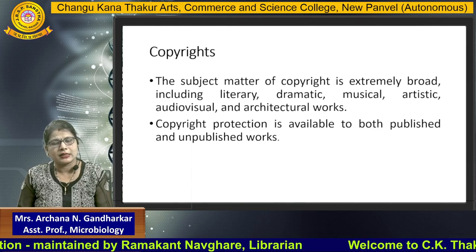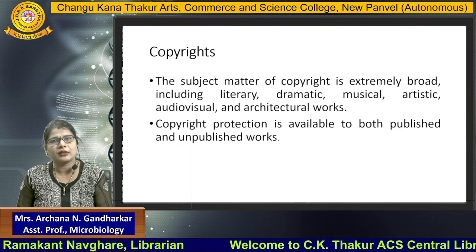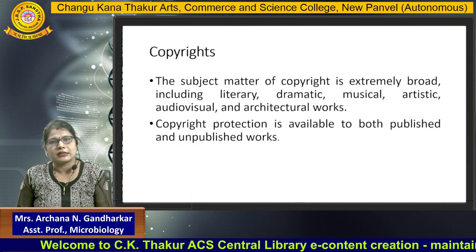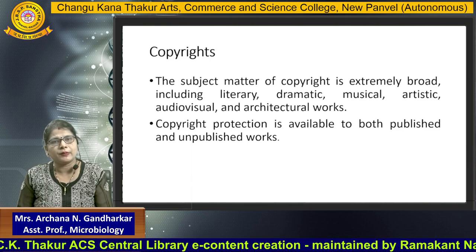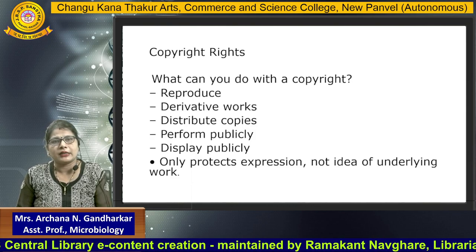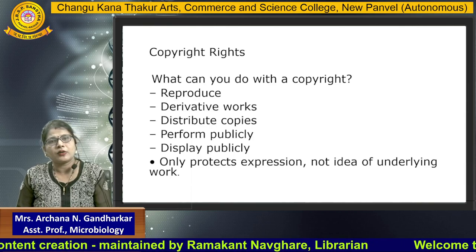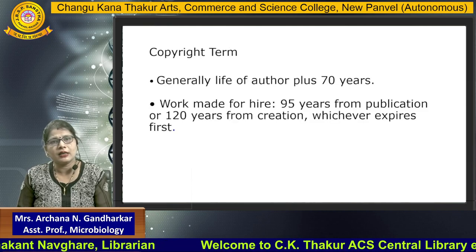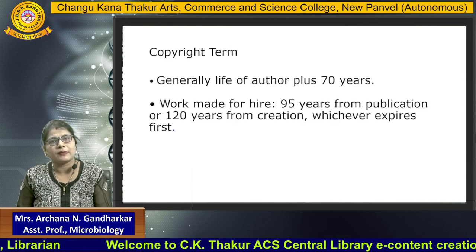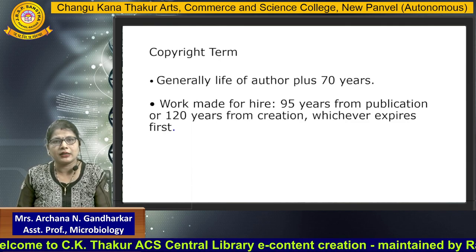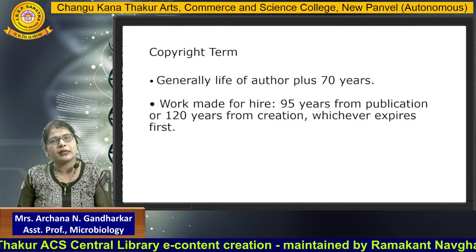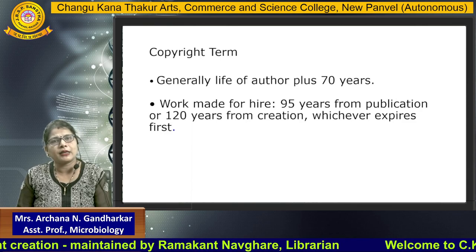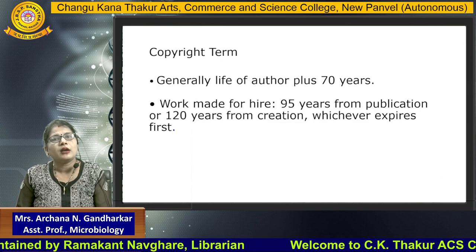The second type is copyright. Copyright is a type of intellectual property that covers architectural work, musical, artistic work, audio-visual work, including literary works, etc. Copyright is the protection available to both published and unpublished works. With copyright, you can reproduce the material, create derivative works, distribute copies, perform it publicly, or display it publicly. Only protected expression, not the underlying ideas, is covered. Copyright term is the author's life plus 70 years; for work made for hire, it is 95 years from publication or 120 years from creation, whichever expires first.